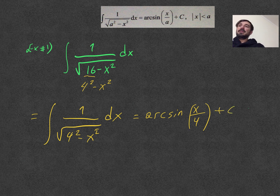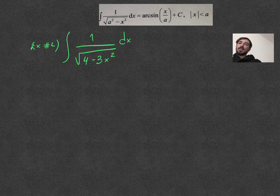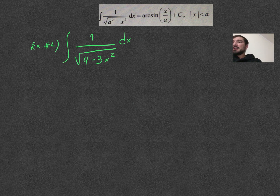This was the simple example. Now in the next slide we have a situation which is different from the previous example. Here the coefficient of x squared is negative 3, whereas in the formula it is 1.